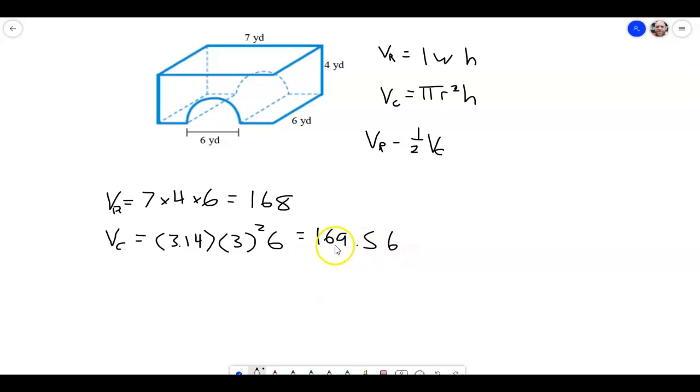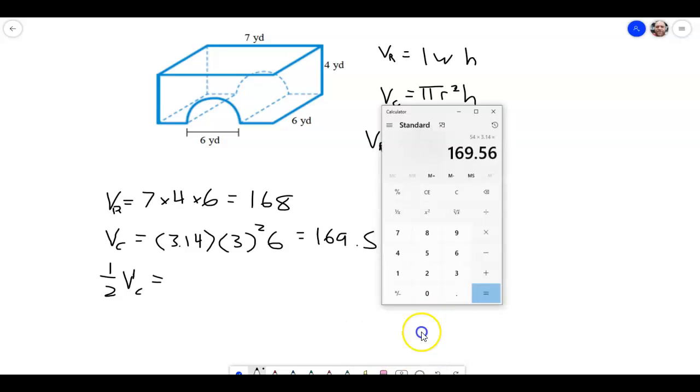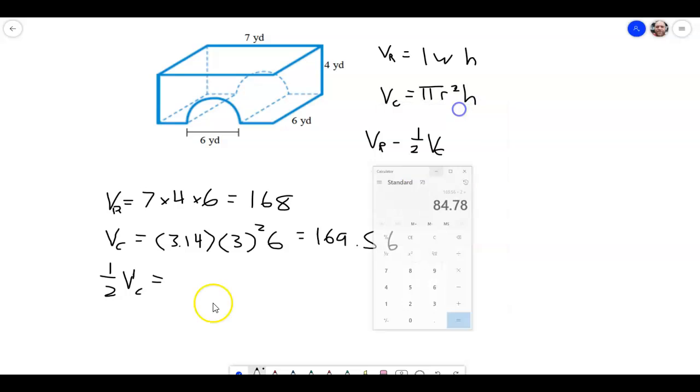But remember, we only want half of that. So if you take half of this, which is the same thing, it's just dividing by 2. So divide that by 2, and you're going to get 84.78.